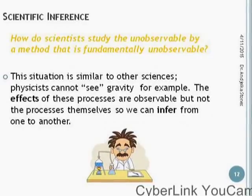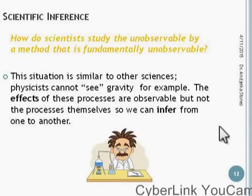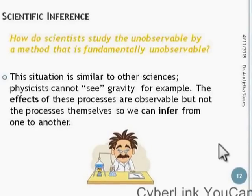Coming back to that first question — how do scientists study the unobservable — this situation is similar to other sciences such as physics. For example, we cannot see gravity, but we know that every single time we drop something it will fall to the ground. So we know gravity exists and we infer from those experiments. Very similarly, we investigate our brain reactions to behavior, or how our behavior perhaps changes our brain chemistry over time.